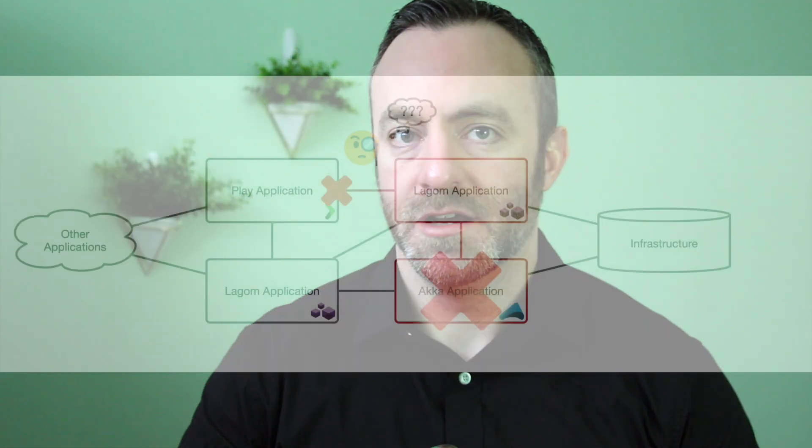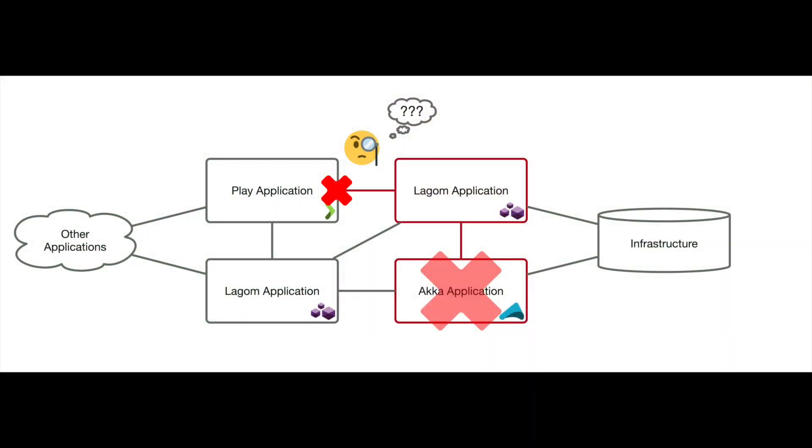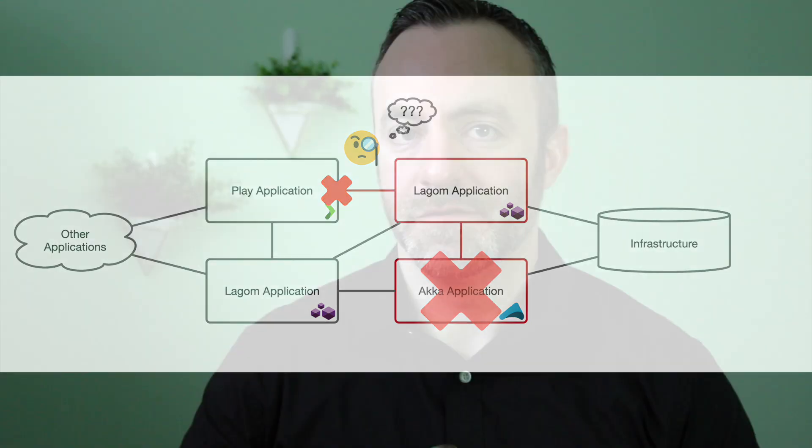Distributed systems present some unique challenges when trying to identify the root cause of errors. Oftentimes, what happens is an error in one system was actually caused by something going wrong in another. And unfortunately, by the time we find out something has gone wrong in production, it's already too late and the business has already been impacted.